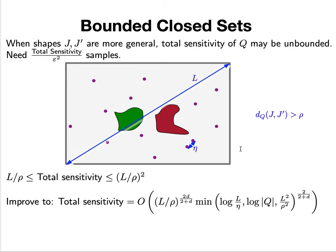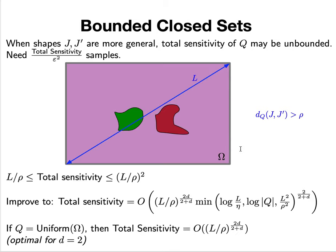The total sensitivity turns out to be tied to these two parameters, L and ρ, where L is the diameter of the domain and ρ is the minimum distance between the two shapes under our choice of D_Q distance.